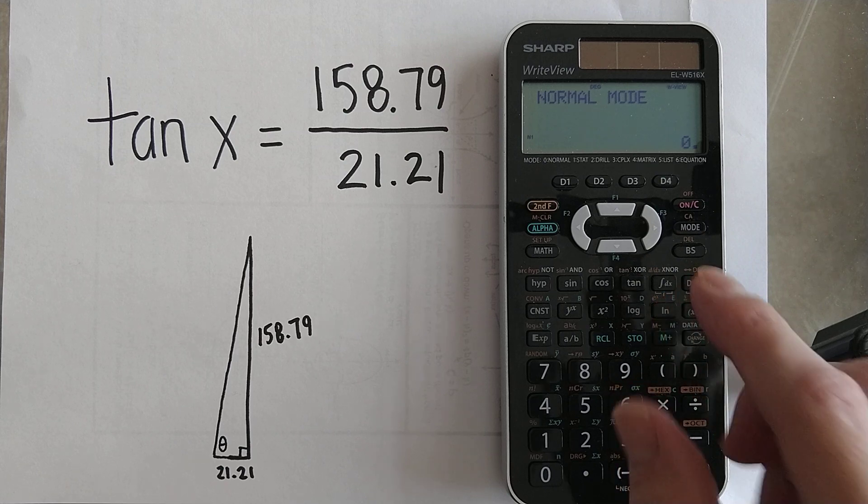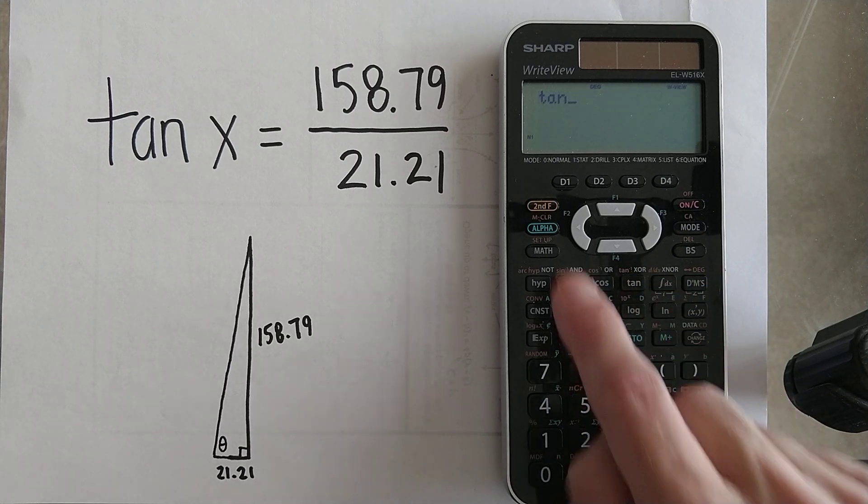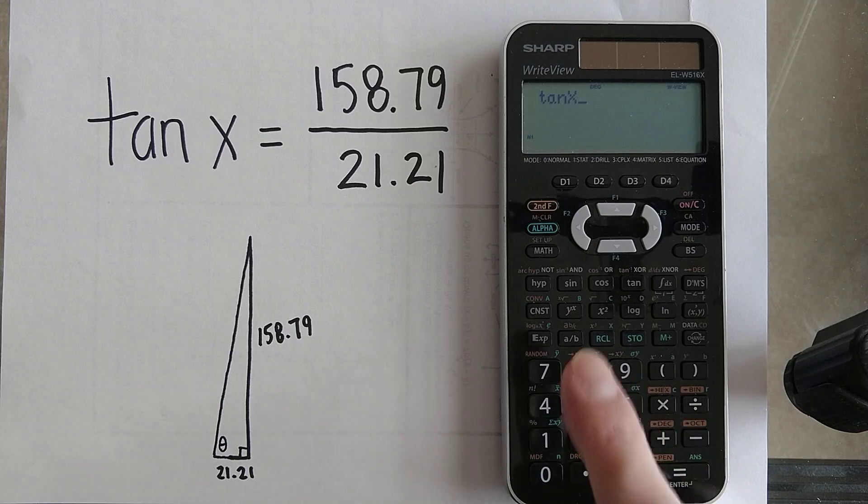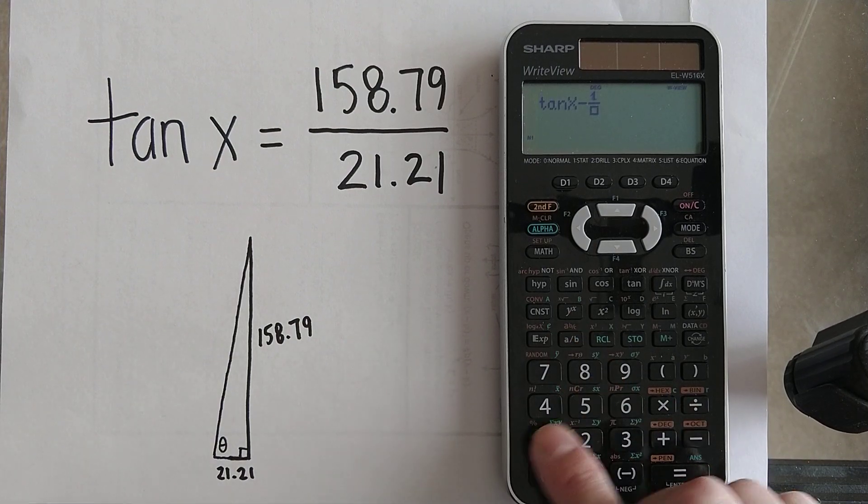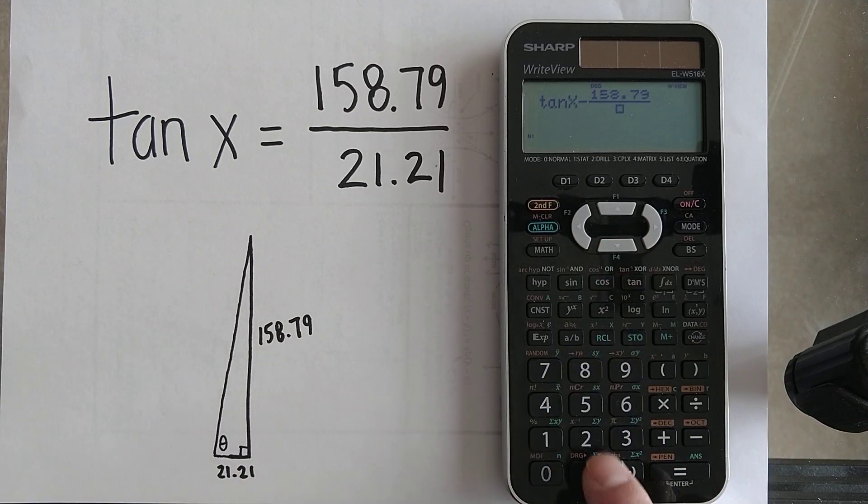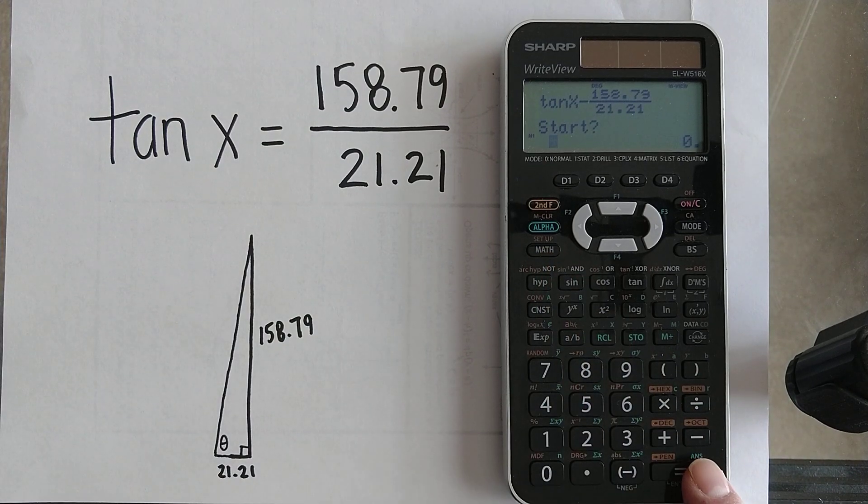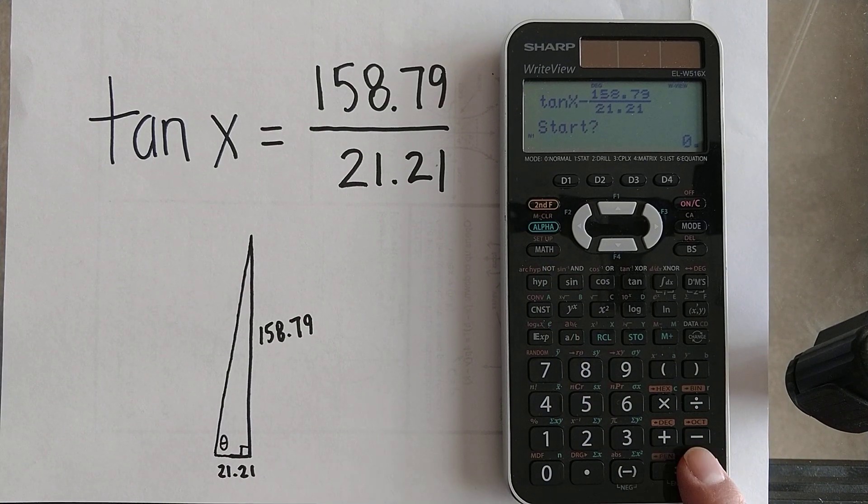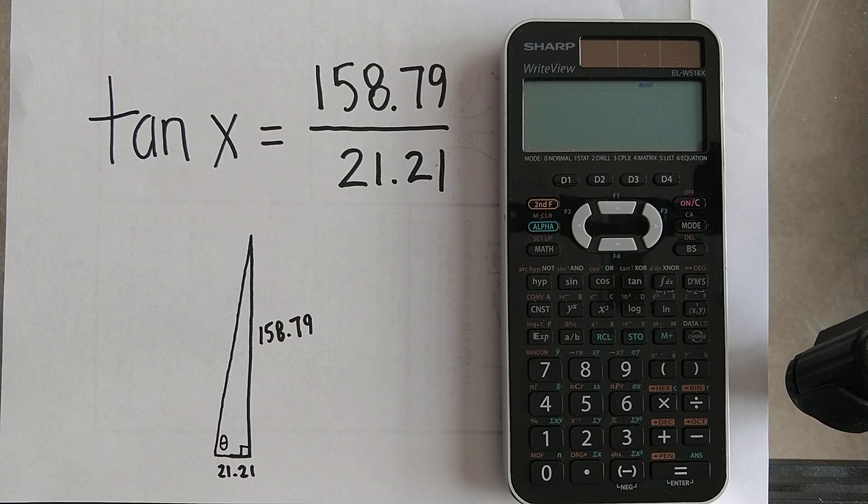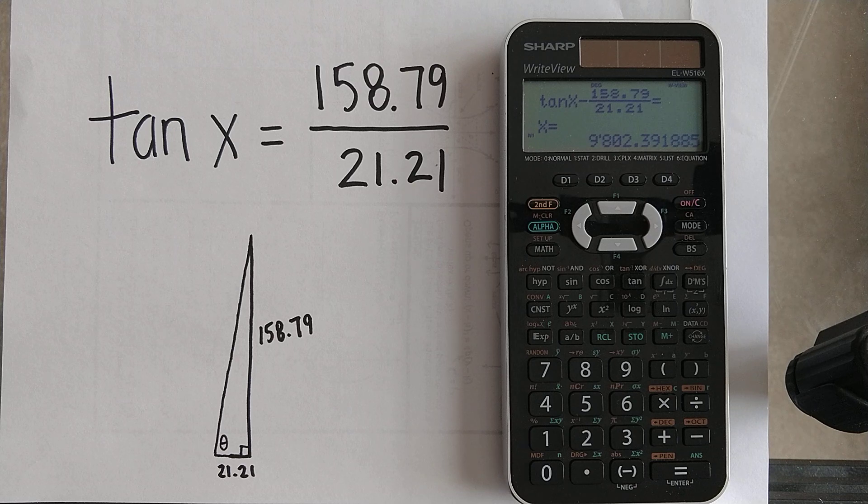On this calculator, you have to have everything on one side. So tangent of x minus 158.79 over 21.21. Hit math, go into solver, and I'm going to take the defaults. It sits and it thinks about it. And it thinks and it thinks, and it thinks some more. If I was Dr. Seuss, I'd be keeping you intrigued, but I'm not. I have nothing to rhyme. Still working on it.